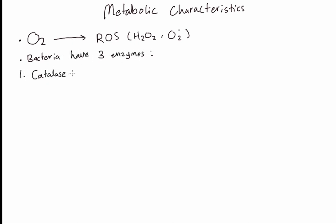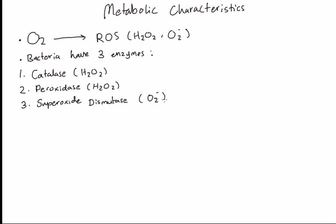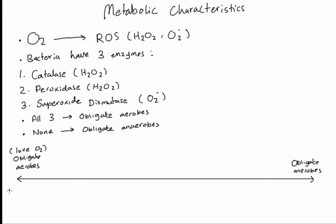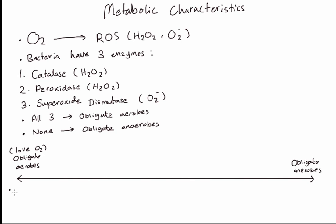Now bacteria they have three kinds of enzymes. They have catalase, this deals with hydrogen peroxide, it neutralizes it. Peroxidase deals with hydrogen peroxide from the name. And superoxide dismutase deals with superoxide. So if bacteria have all three of these enzymes, they're going to be fine with oxygen, and we call these obligate aerobes. If they don't have any of these enzymes, they can't tolerate oxygen or reactive oxygen species. We call them obligate anaerobes. So bacteria are either at these two ends or they'll be somewhere in between. They'll have one or two enzymes.